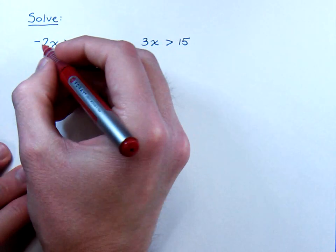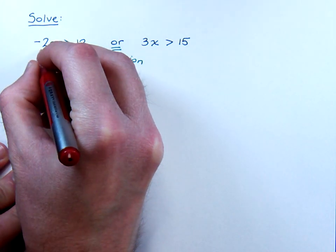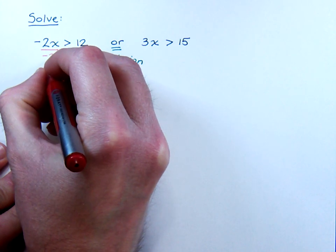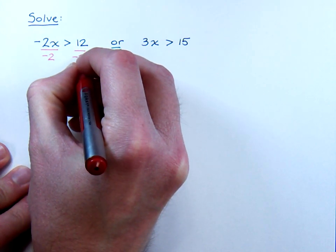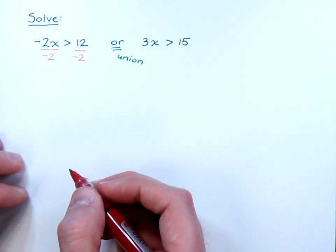So if we look at this first inequality here, to solve this guy for x, we just need to divide both sides by negative 2, and that's using the multiplication property.